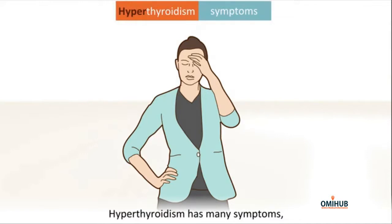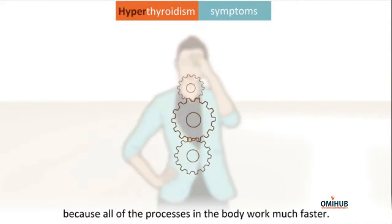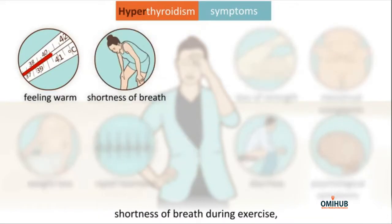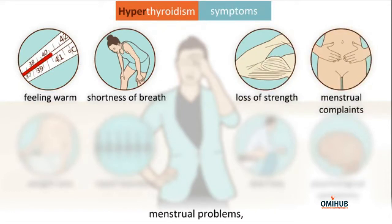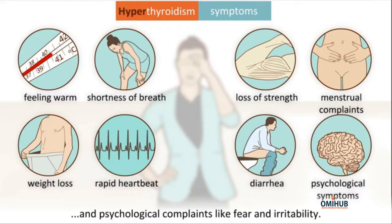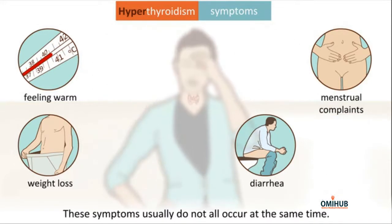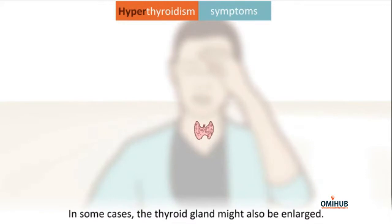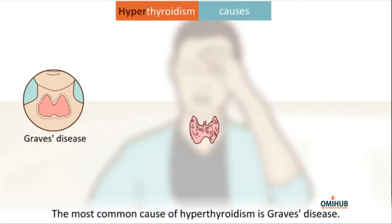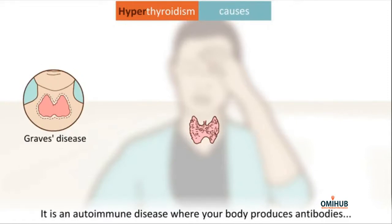Hyperthyroidism has many symptoms because all processes in the body work much faster. Common complaints are feeling warm, shortness of breath during exercise, loss of strength, menstrual problems, weight loss, increased heart rate, diarrhea, and psychological complaints like fear and irritability. These symptoms usually do not all occur at the same time. In some cases, the thyroid gland might also be enlarged.